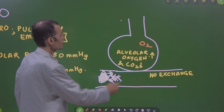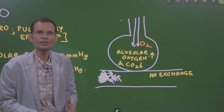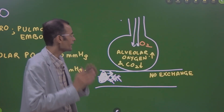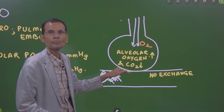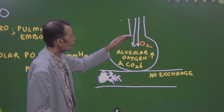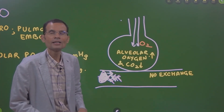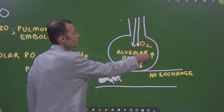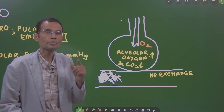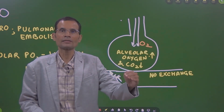Normal ventilation is still present, so normal atmospheric air and oxygen are reaching the alveolar air. But since there is no blood flow to the alveolus, oxygen is not able to diffuse from the alveolus into the blood. Oxygen is simply accumulating, piling up in the alveolar air, and therefore PO2 in the alveolar air will rise.